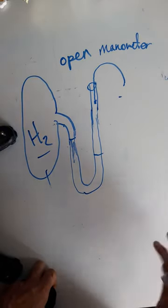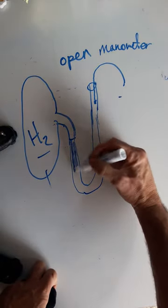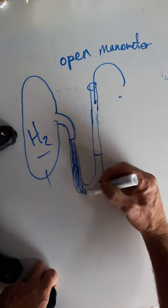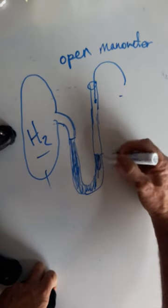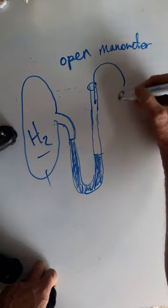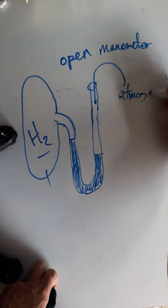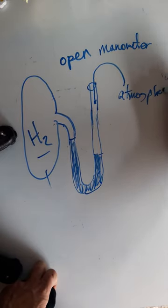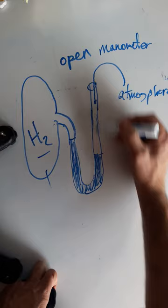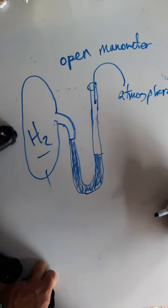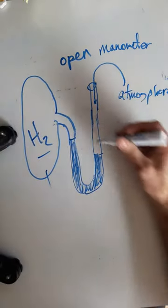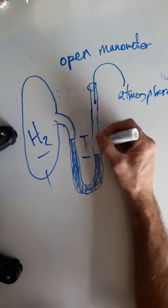The other type of open manometer would be where the mercury level is higher in the gas arm, which means that the atmospheric pressure is pushing stronger than the gas arm here. So when you measure the distance between here,